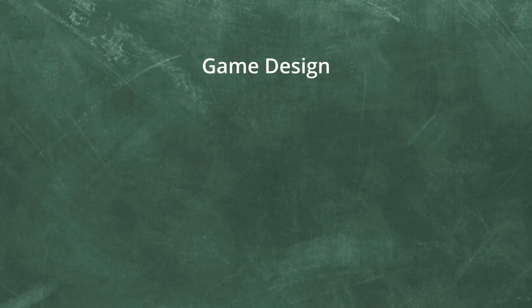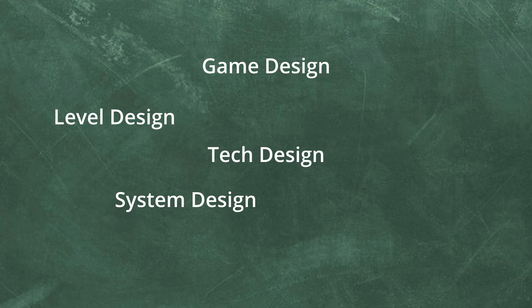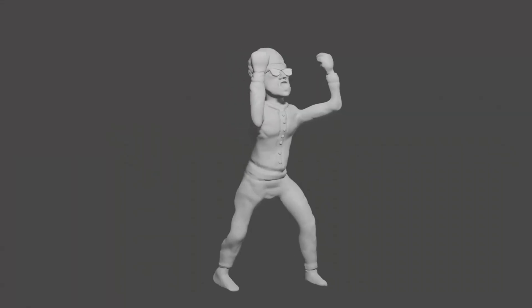In game design we have general game design, level design, system design, tech design — different forms of design. And in animation we have something like narrative design and character design, which doesn't have to be specific for animations or for games. It kind of works in both. It is really difficult to specify what design actually is.